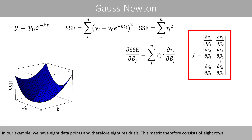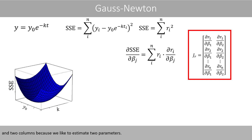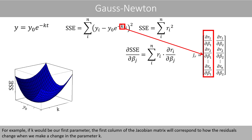In our example, we have eight data points and therefore eight residuals. The Jacobian matrix consists of eight rows and two columns, because we want to estimate two parameters. For example, if k is our first parameter, the first column of the Jacobian matrix corresponds to how the residuals change when we make a change in the parameter k.